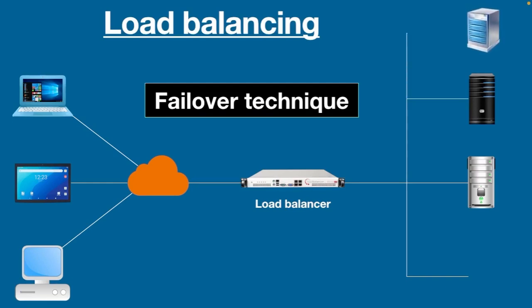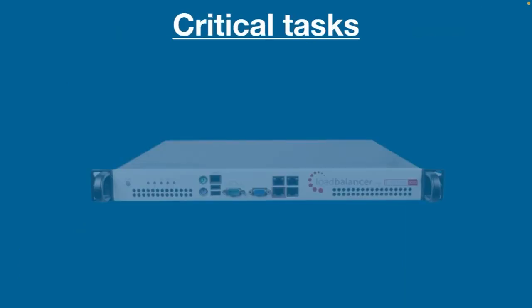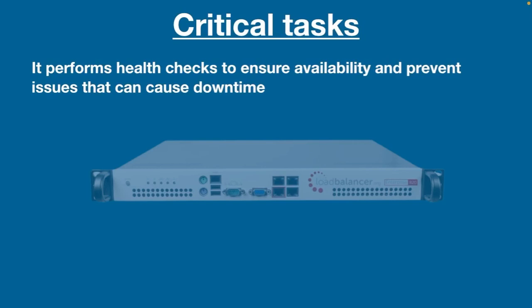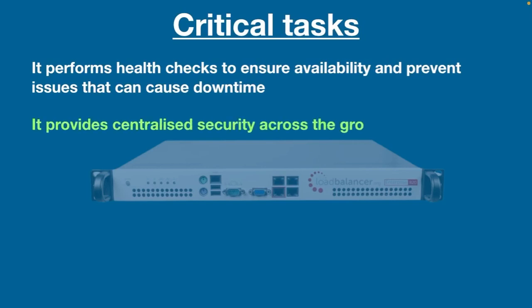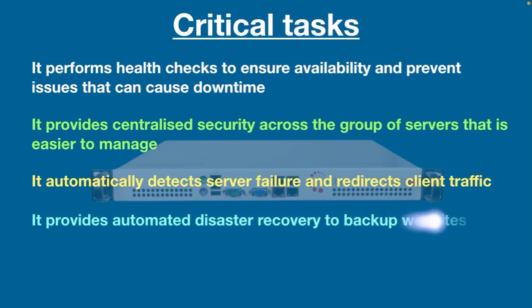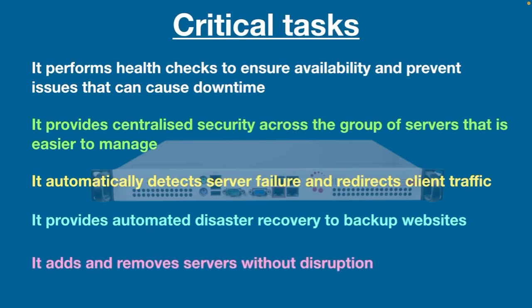Moreover, when a new server is added to the server group, the load balancer automatically starts sending requests to it. Critical tasks performed by the load balancer include: performing health checks to ensure availability and prevent downtime, providing centralized security across the group of servers, automatically detecting server failure and redirecting client traffic, providing automated disaster recovery to backup websites, adding and removing servers without disruption, and monitoring and blocking malicious content.